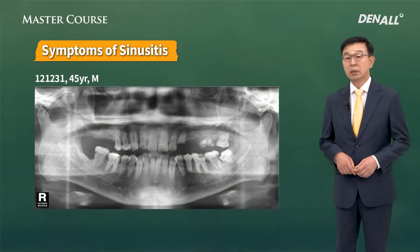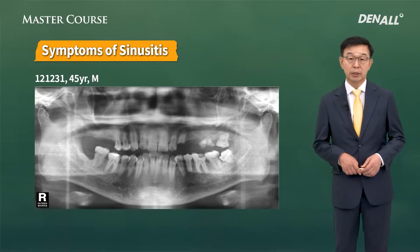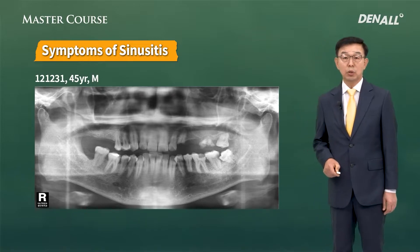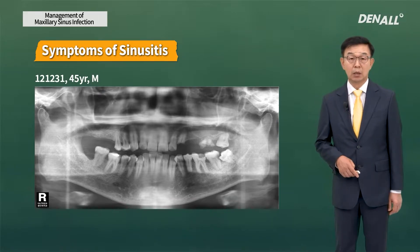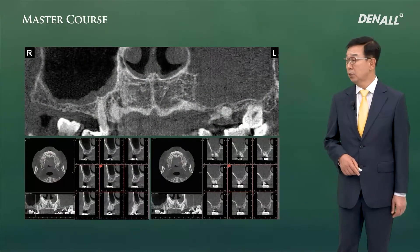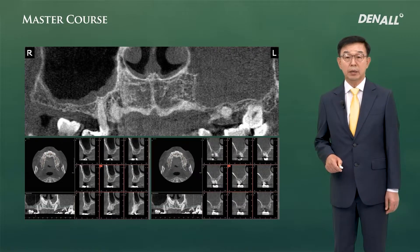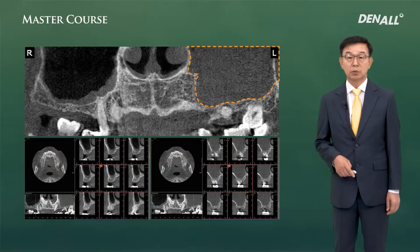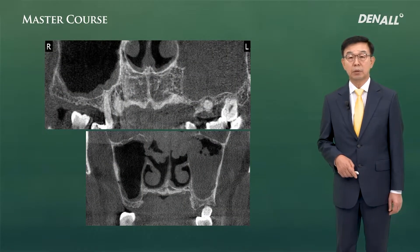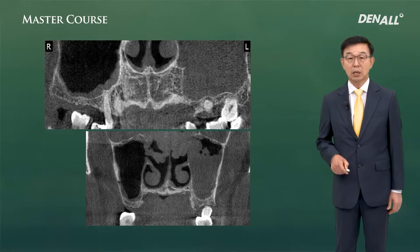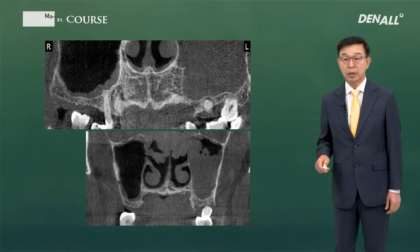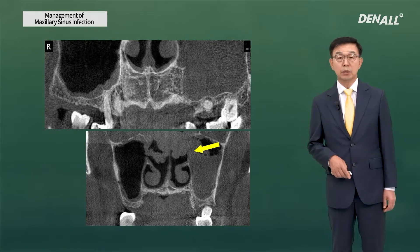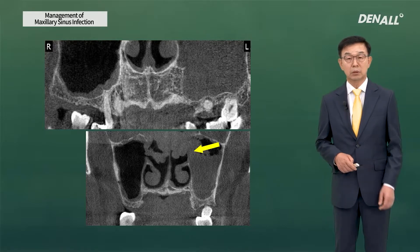This is a 45-year-old male patient. In the upper left posterior area, implant was to be placed. If you look at the radiograph compared with the right, on the left posterior area there is more bone density. No symptoms of sinusitis were complained. On CT, compared with the right sinus, the left is full of secretion. The middle ostium is blocked and within the left sinus there is mucosal thickening. We can conclude that this patient has chronic sinusitis.